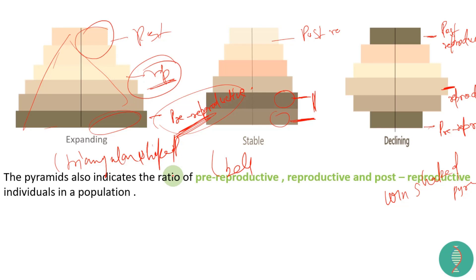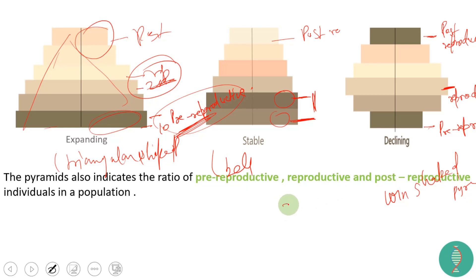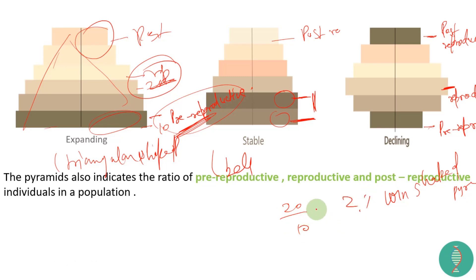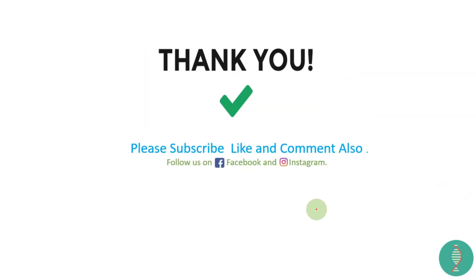The pyramid also indicates ratios between age groups. For example, if there are 10 pre-reproductive individuals and 20 reproductive individuals, the ratio is 20 to 10, which is 2:1. This way you can find the ratio of pre-reproductive to reproductive to post-reproductive for any given population. Thank you so much.